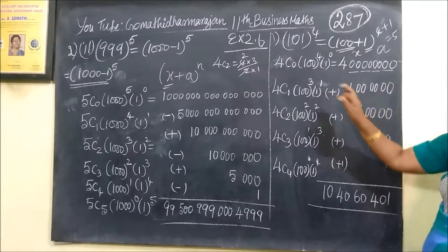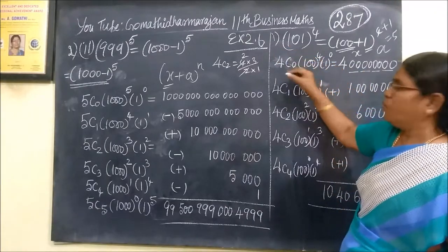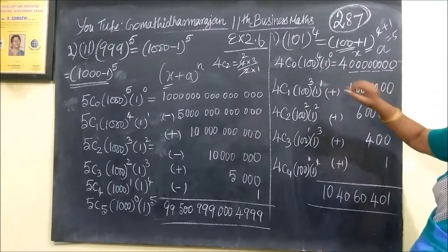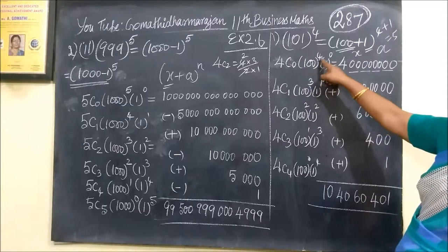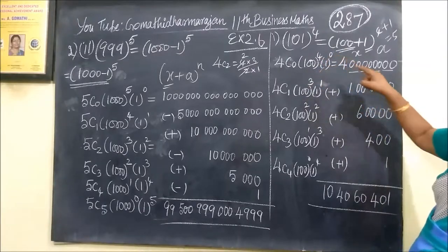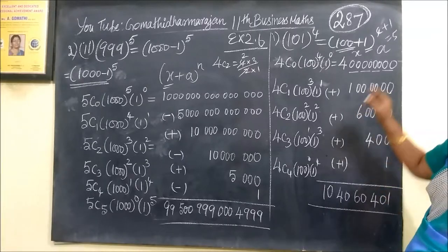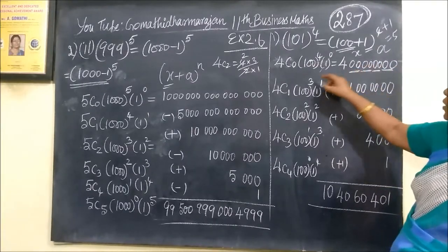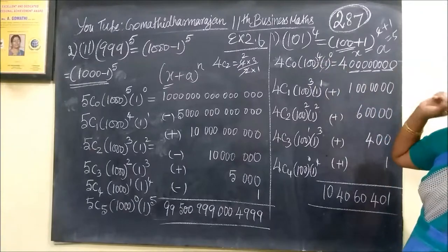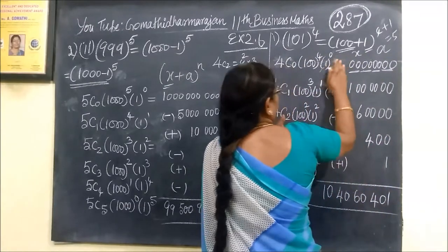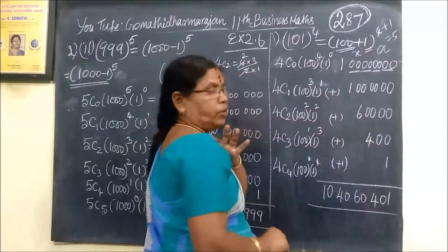4C0, this is nothing but 1, so no need to write. 1 power 0, that also 1, no need to write. This is 4 multiplied by 100. 4 times 100 is 400. Double zero, double zero, double zero - four hundred thousand. Two zeros, two zeros, two zeros.